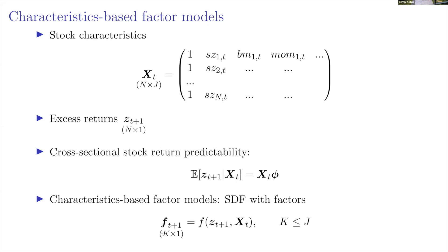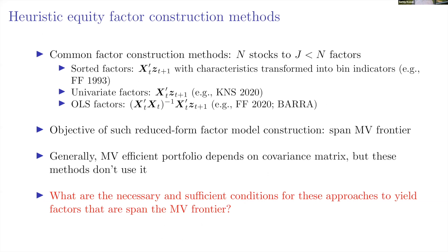We construct these factors as a function of characteristics X and returns Z. There are many ways to do this in practice. We could use the Fama-French approach — creating sort portfolios — or univariate factors, which are essentially just characteristics X used as portfolio weights, giving X-prime-Z factors.